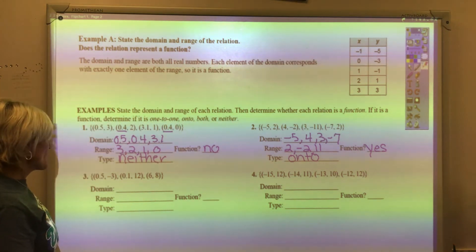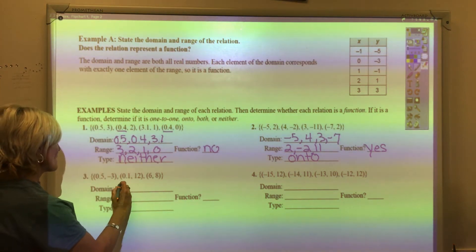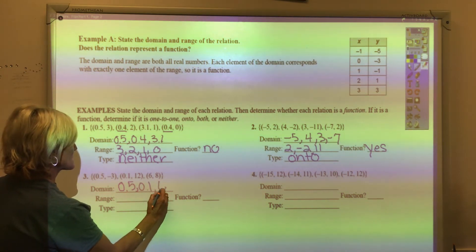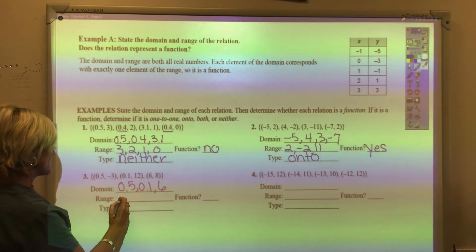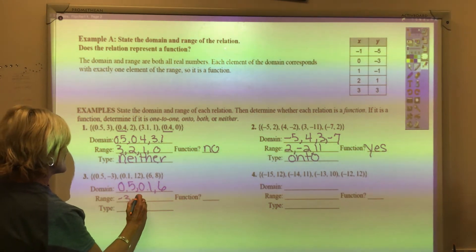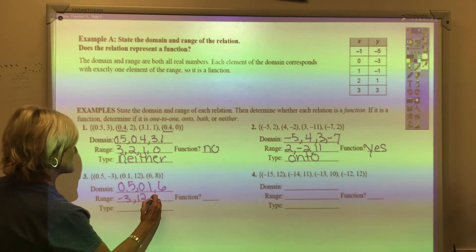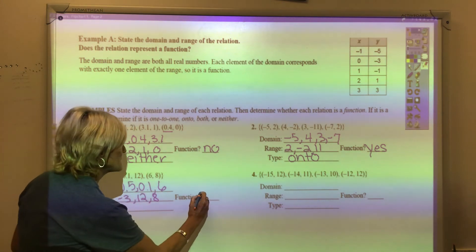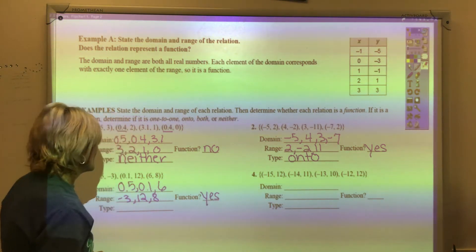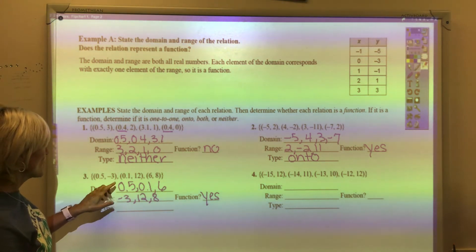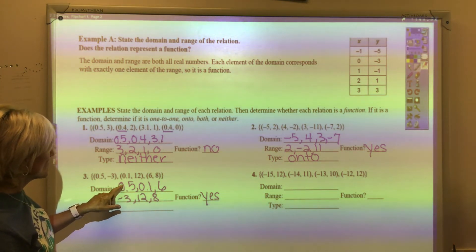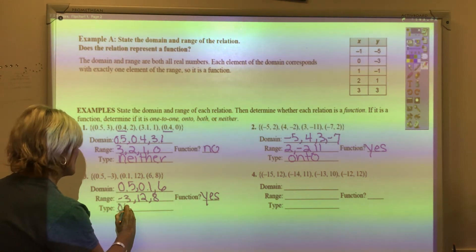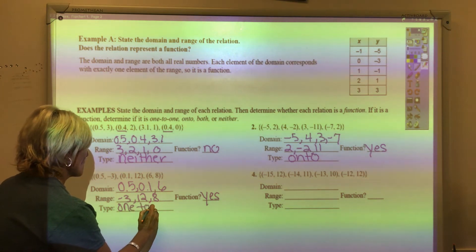For number 3, the domain is 0.5, 0.1, and 6. The range is negative 3, 12, and 8. The domain did not repeat, so yes, this is a function, and the kind of function it is, is a one to one. Notice that there's only one x with one y. This is a one to one.